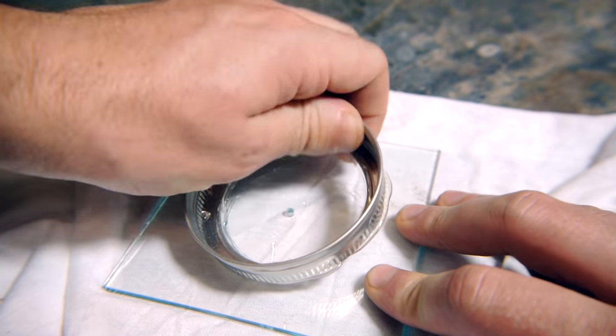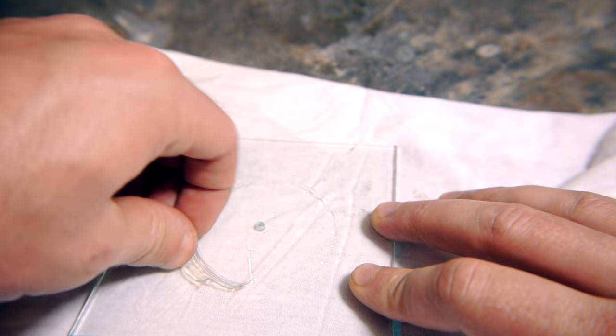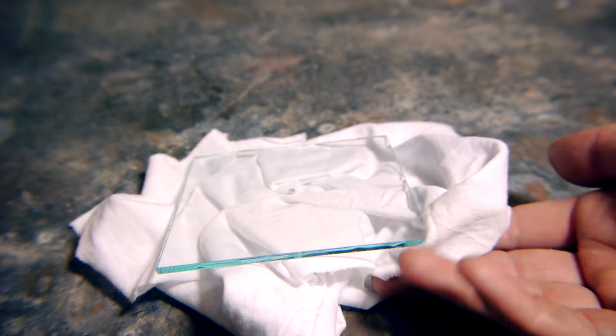We're done with the ring, so that can now be removed. Some rubbing alcohol will loosen the hot glue if it doesn't peel off easily.